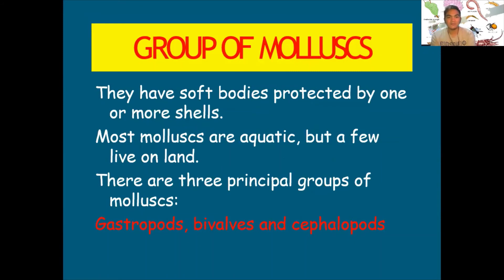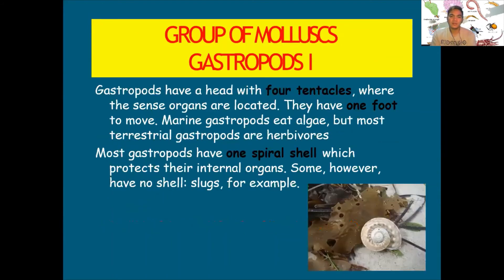Mollusks have soft bodies protected by one or more shells. Most mollusks are aquatic but a few live on land. There are three principal groups: gastropods, bivalves, and cephalopods. Gastropods have a head with four tentacles where sense organs are located, and one foot to move. Marine gastropods eat algae, but most terrestrial gastropods are herbivores. Most gastropods have one spiral shell protecting their internal organs.